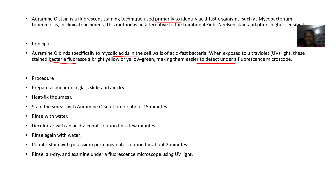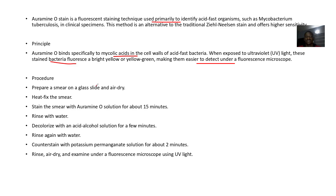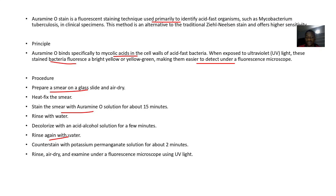This makes it easier to identify them under a fluorescent microscope. For the procedure: prepare a smear on a glass slide and air dry it, heat-fix the smear, stain with Auramine O solution for about 15 minutes, rinse with water, decolorize with acid alcohol solution for a few minutes, rinse again with water, counter-stain with potassium permanganate solution for about two minutes, rinse, air dry, then examine under a fluorescence microscope using ultraviolet light.